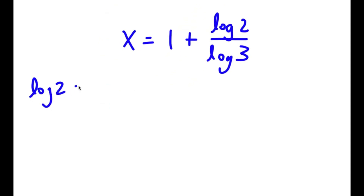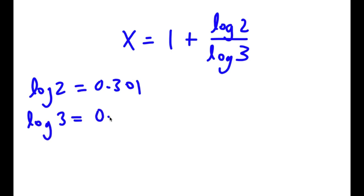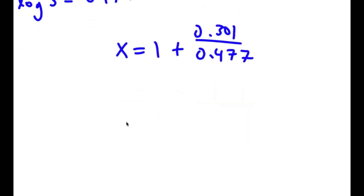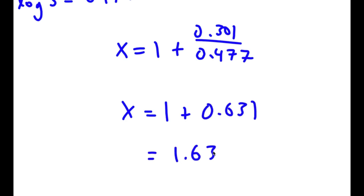Log 2 is equal to 0.301, and log 3 is equal to 0.477. So I have x is equal to 1 plus 0.301 over 0.477, which gives x is equal to 1 plus 0.631, which is equal to 1.631.